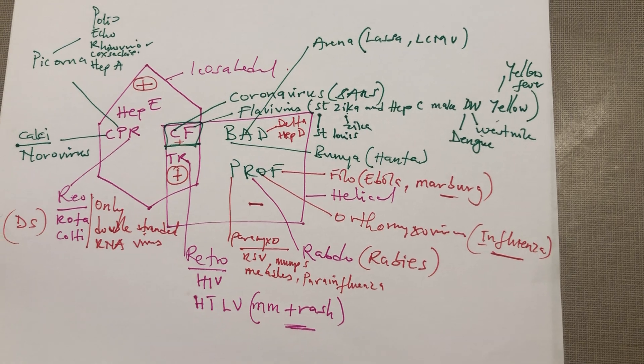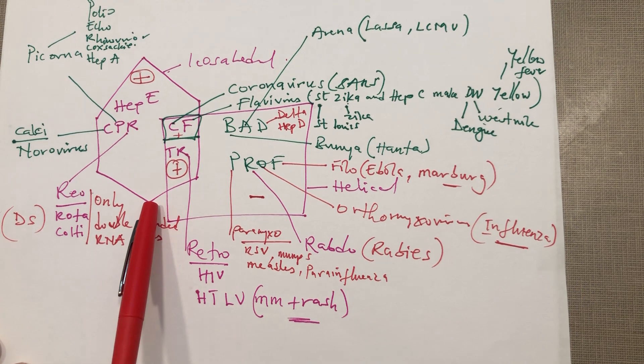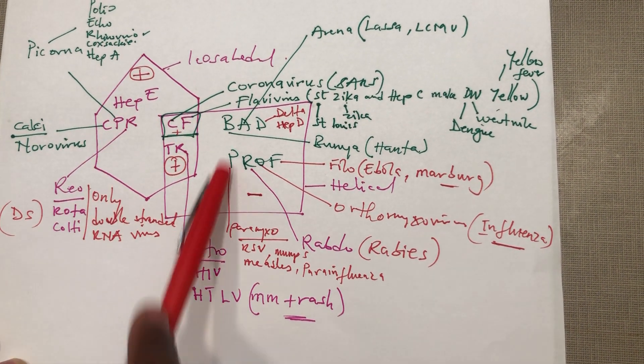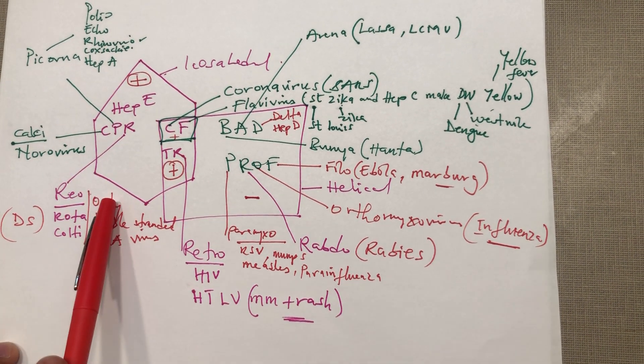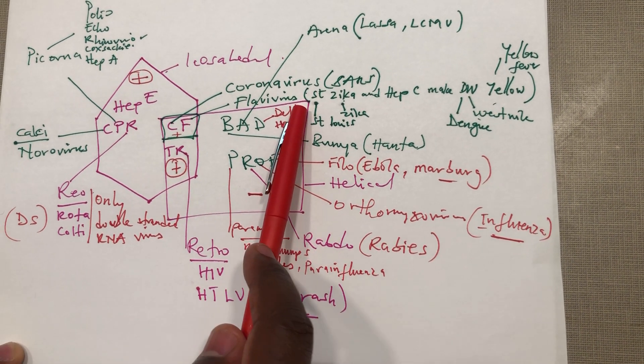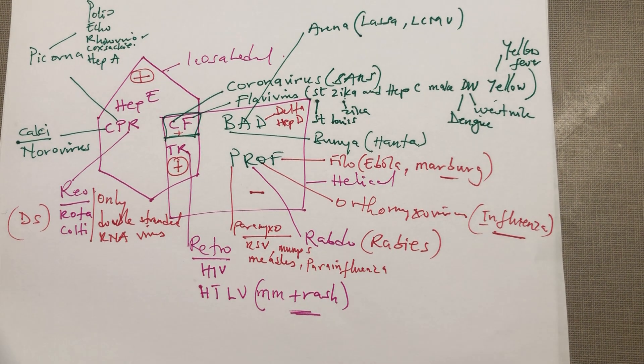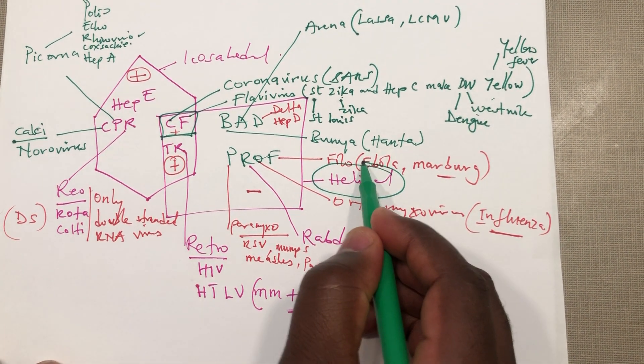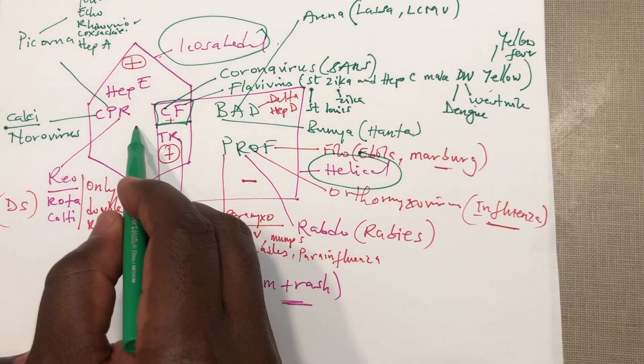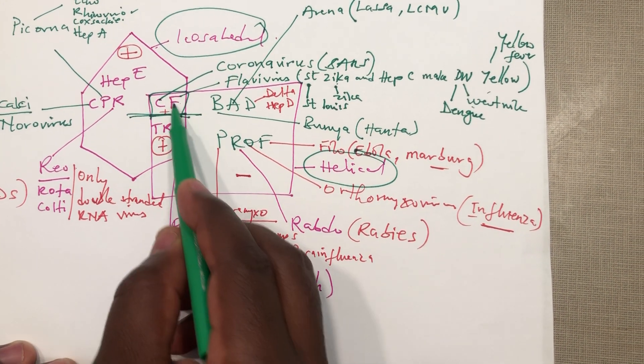This is the summary of all the RNA viruses and their characteristics. Again I said anything that you see in this icosahedral shape, which is a hexagon, the virus is icosahedral. If you see it in this box it means that it is helical. Here we cross this into two since they intersect, so the CF belongs to this box and the TR belongs to this.